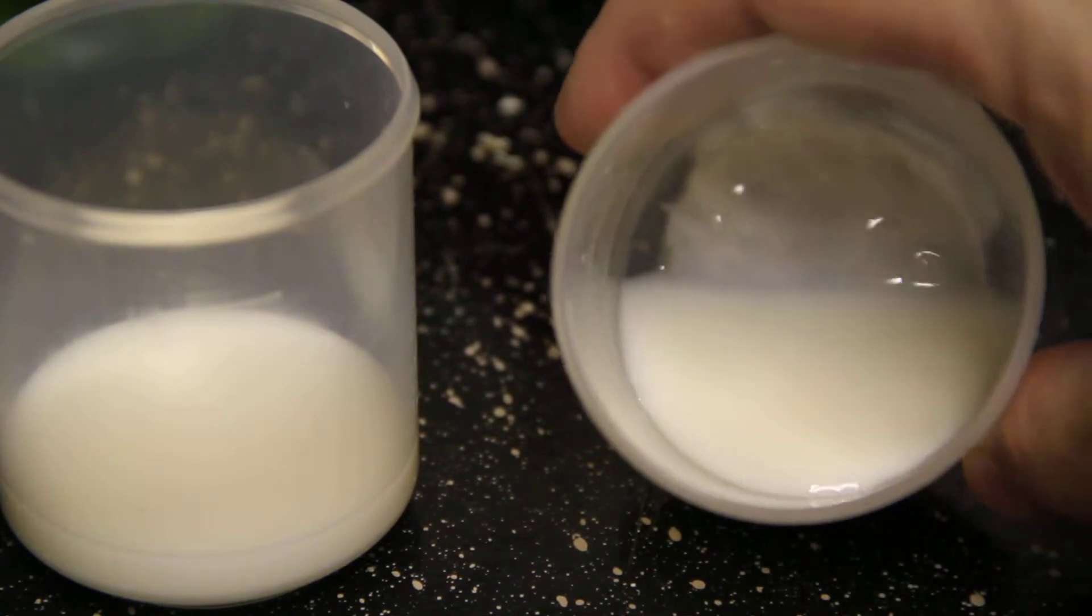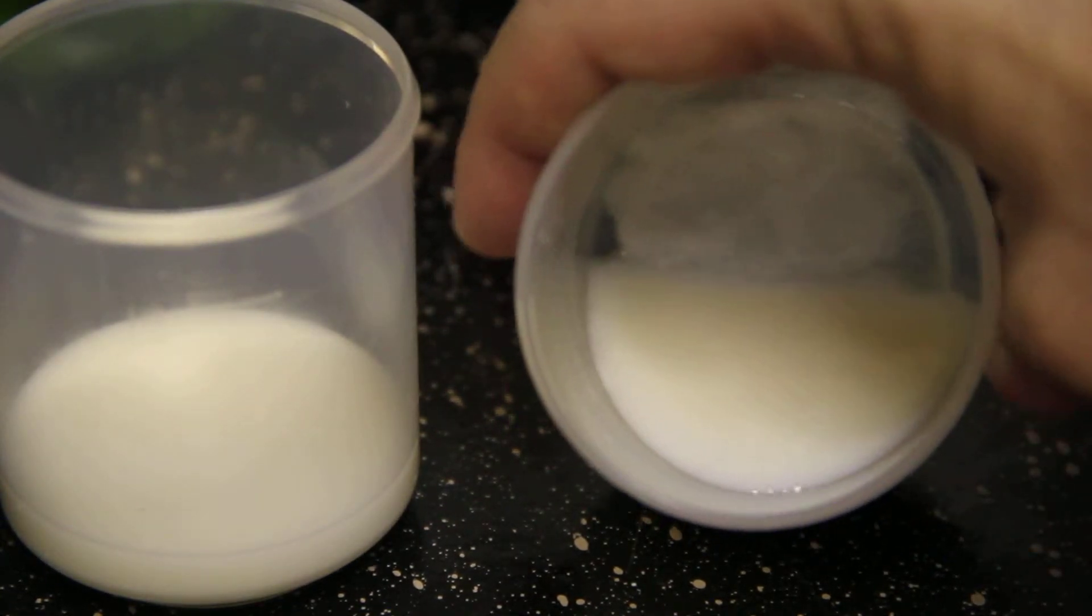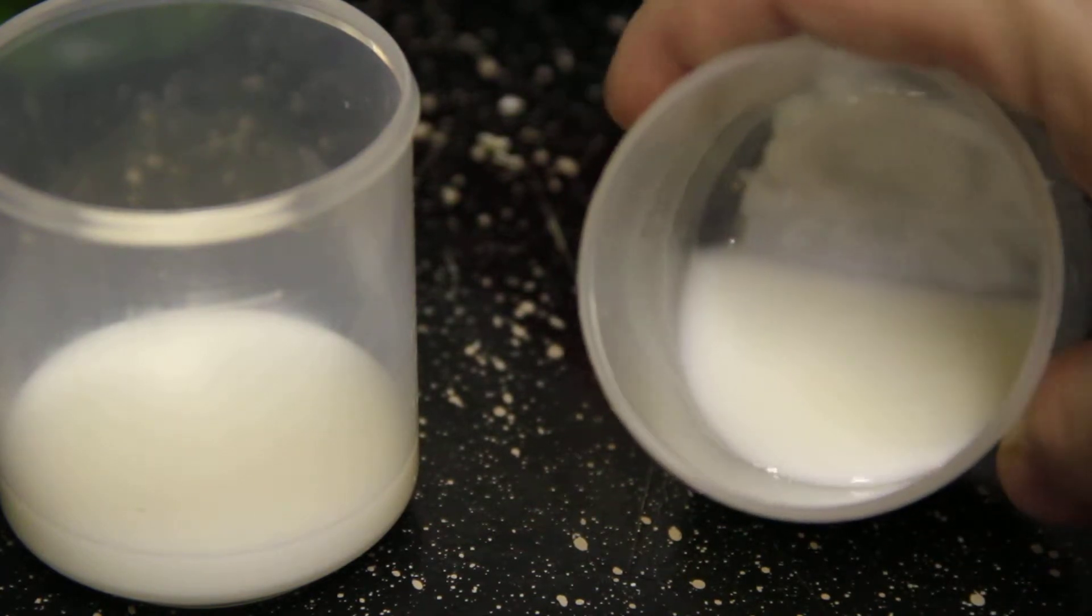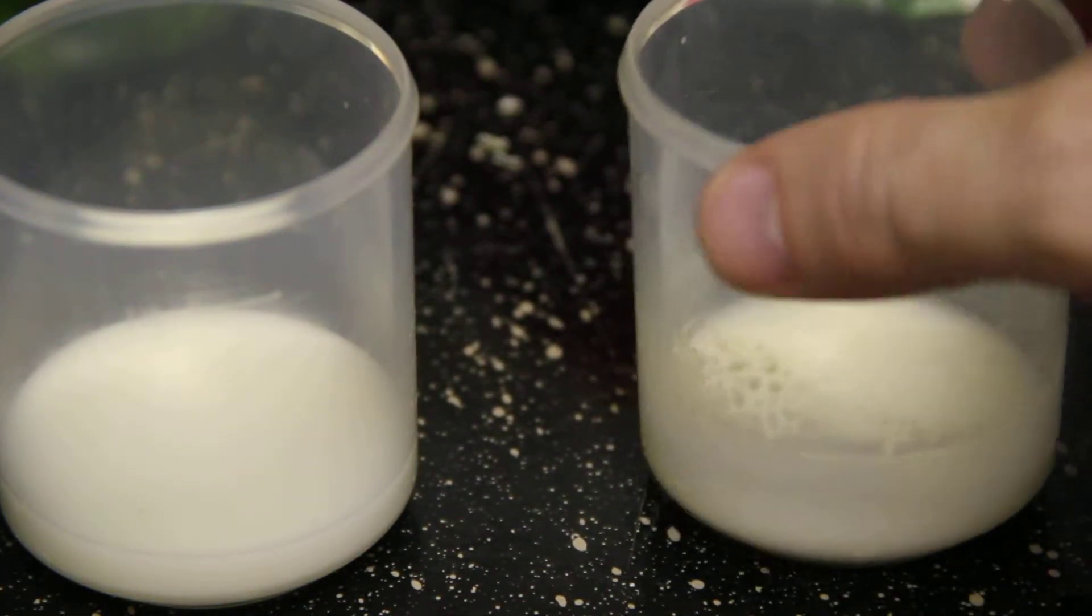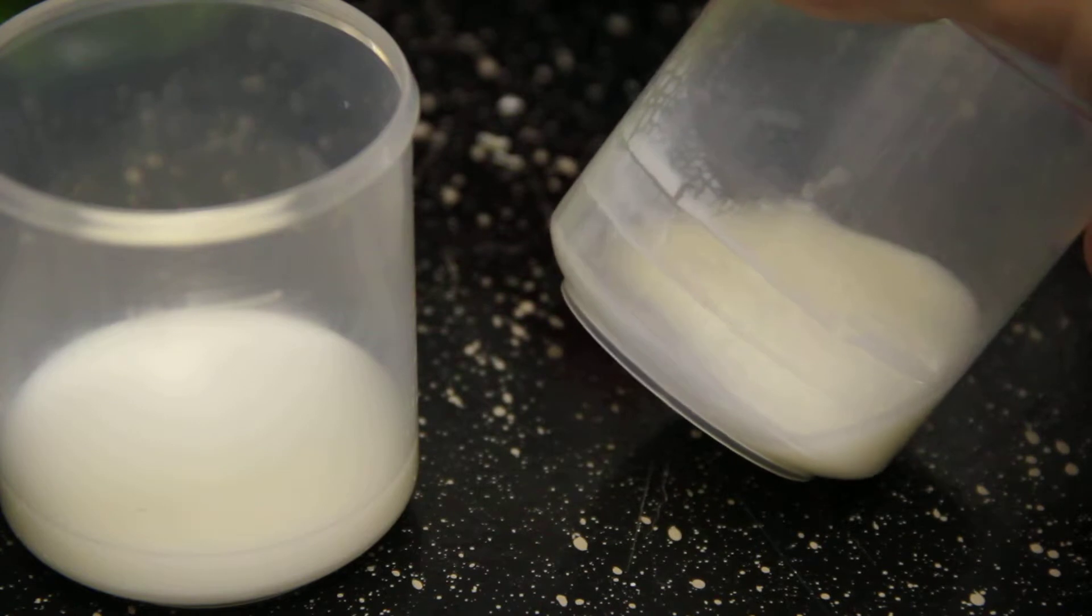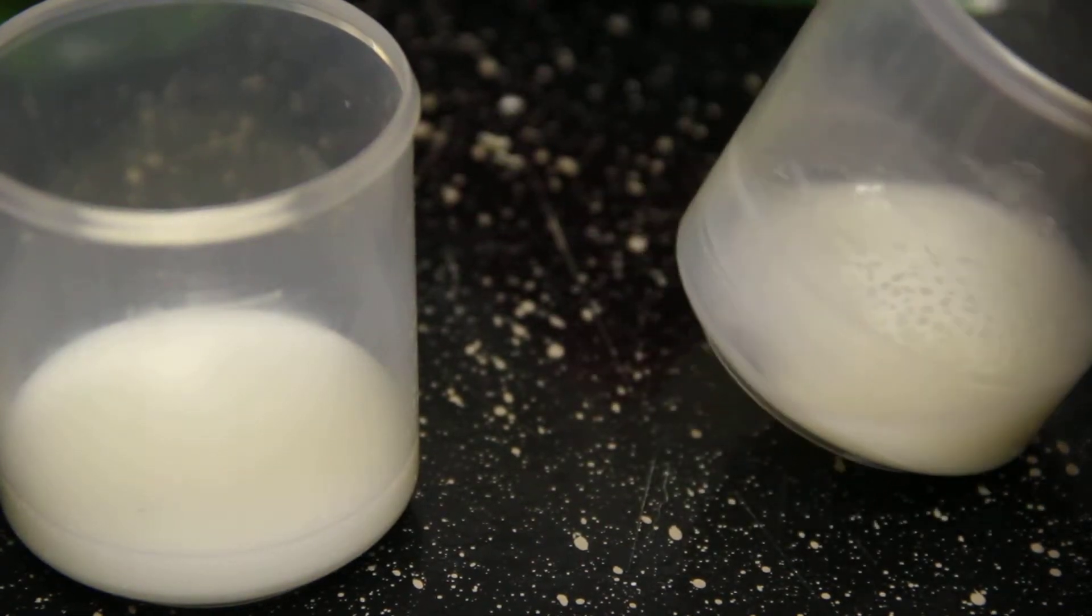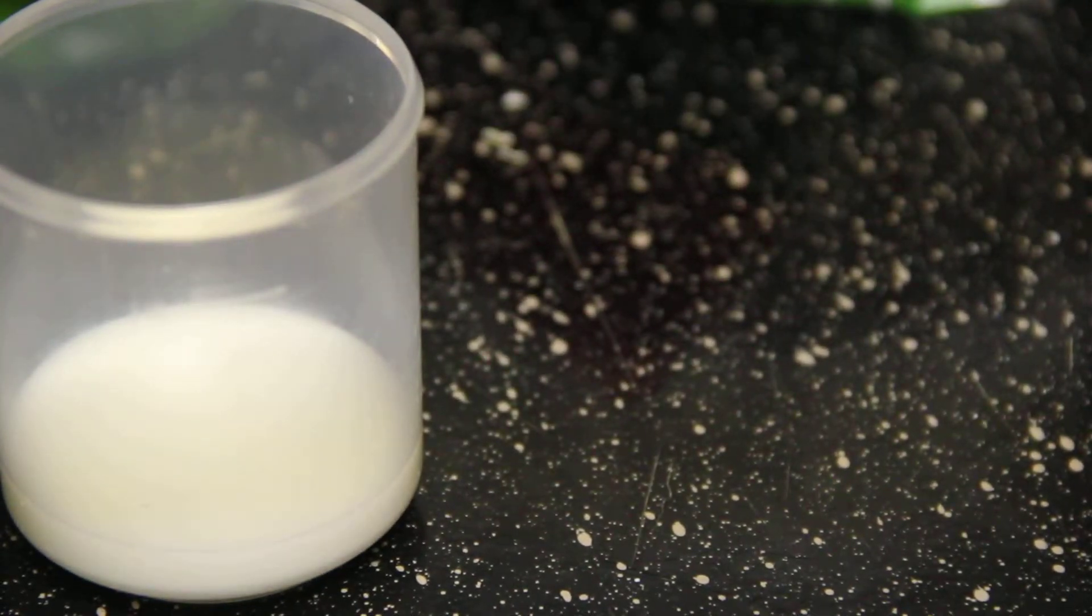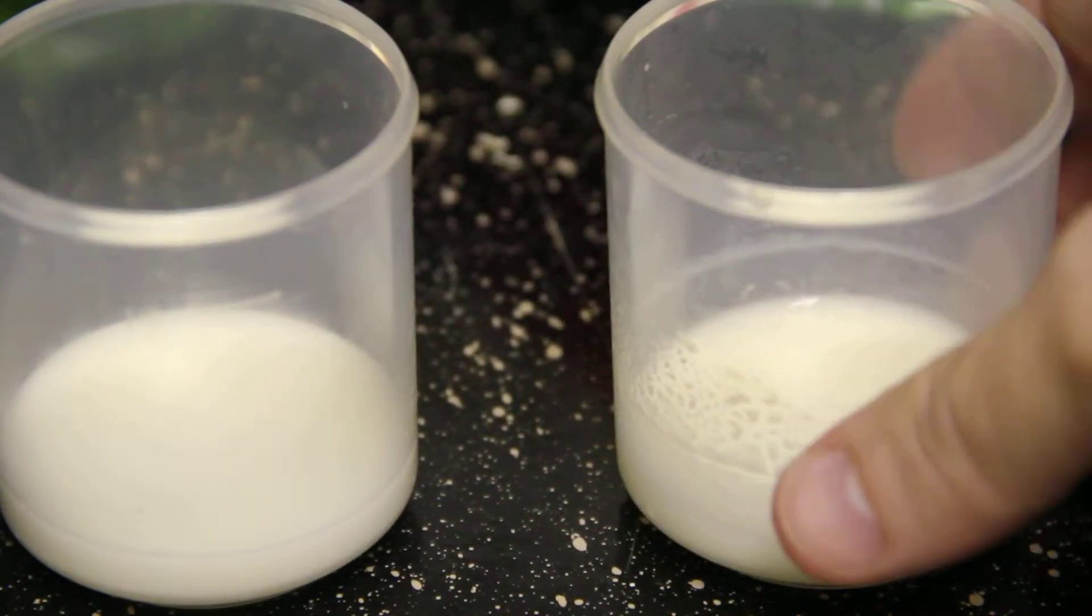As you can see this in here, it's still curdling at the bottom. Milk is trying to separate still. Hasn't completely done so, but it's working on it. You can see where it's dried on the sides. And it smells spoiled too. It definitely smells like it's bad.